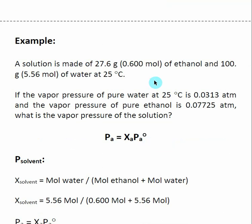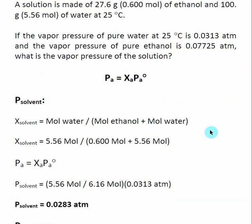We're going to be looking at mole fractions, so we need moles of our solute and moles of our solvent. We have 100 grams of water, equal to 5.56 moles of water, and 27.6 grams of ethanol, equal to 0.6 moles of ethanol. We also need the vapor pressure of water and ethanol, both at 25°C — the vapor pressure of pure water and the vapor pressure of pure ethanol are both given, and we're going to need to do two different calculations.